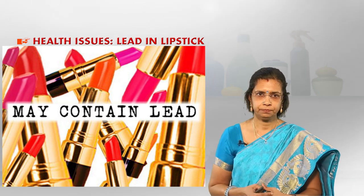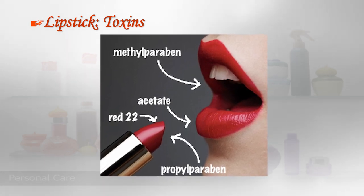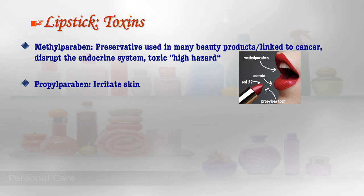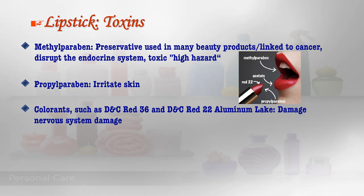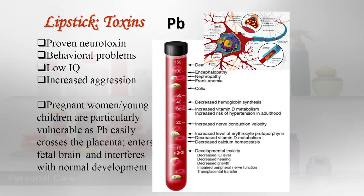Lipsticks also contain methylparaben, tocopheryl acetate, Red 22, certain colorants, and polyparabens. Methylparaben is a preservative used in many beauty products and is linked to cancer — it disrupts the endocrine system with a high hazard level. Polyparabens definitely irritate the skin. Colorants such as D&C Red 36, D&C Red 22, and aluminium lake can damage the nervous system. Tocopheryl acetate, known as vitamin E acetate, causes itching, burning, scaling, and skin blistering. Very high amounts of lead cause encephalopathy, nephropathy, colic and disturbances, and decreased hemoglobin synthesis — it is a proven neurotoxin.